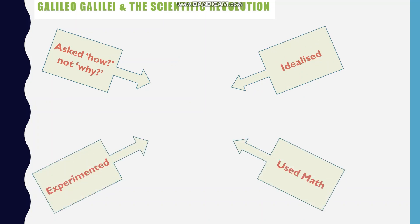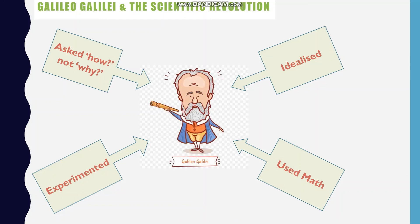Asking how questions, idealizations, experimentation, and the use of mathematics all came together for the first time in one man, Galileo. Thus, we can say, Galileo set the revolutionary path for 17th century science and beyond.